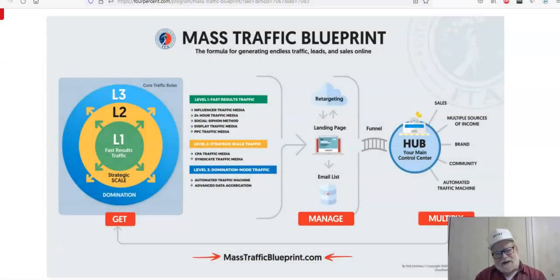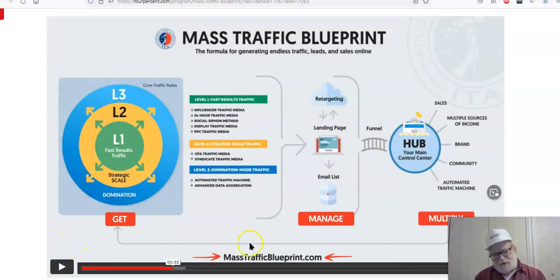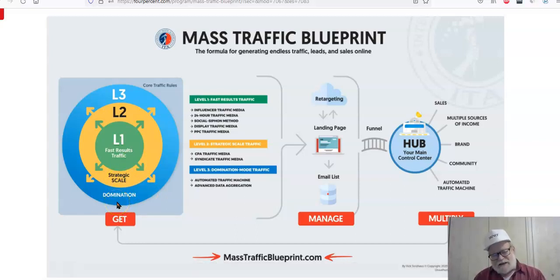We're back here looking at our Mass Traffic Blueprint. This is the blueprint for traffic. There are three sections here. We talked about this before. There is getting traffic, where you use these different methods to get traffic. There's fast results traffic, which is traffic within 24 to 48 hours. There's strategic scale, which is the next step above that. And then there's domination, which is the final step. And I already did a video on domination. You can take a look at that video. It's called Dominate in Any Niche.